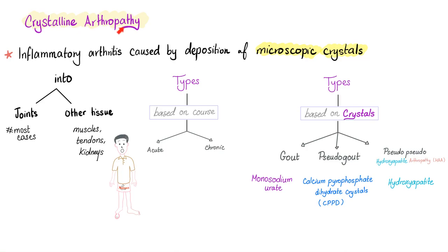Gout is a crystalline arthropathy, which is inflammatory arthritis caused by deposition of microscopic crystals into joints and other tissue. It could be acute or chronic. It's called gout if the crystals are monosodium urate. If the crystals are calcium pyrophosphate dihydrate crystals, we call this pseudogout. If the crystals are hydroxyapatite crystals, we call this hydroxyapatite arthropathy, also known as pseudo-pseudogout.